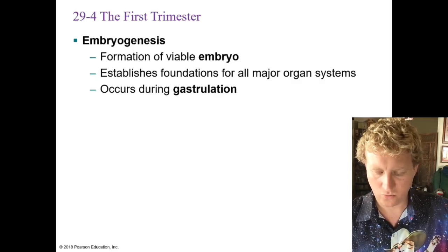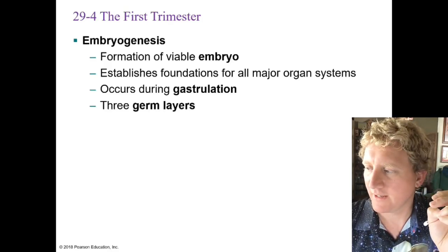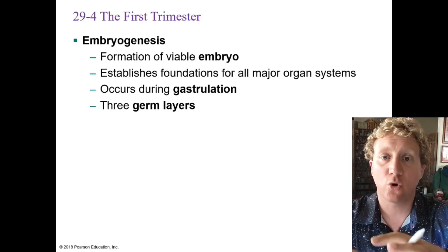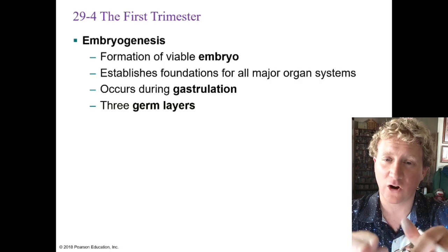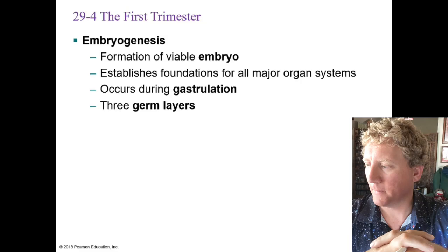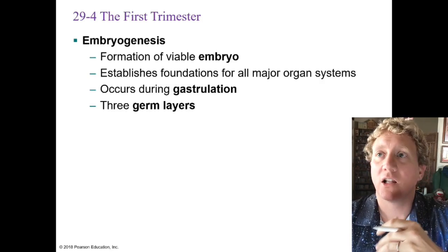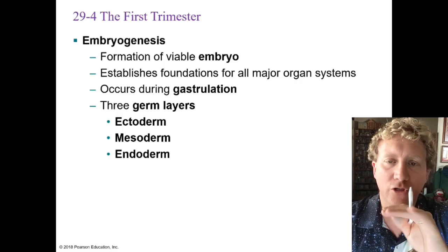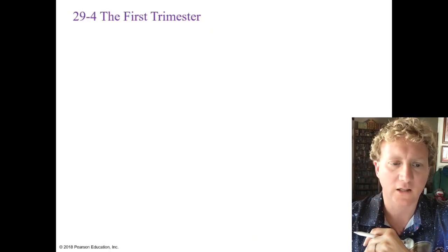Embryogenesis occurs during a process known as gastrulation — germ layer formation. Cells that have been forming as a blob start migrating to different areas based on chemical cues through a process called induction. As they move, they form layers like a cake — three layers. The evolutionary significance of the third layer is huge as it gives rise to connective tissue. The three germ layers from outside in are: ectoderm, mesoderm in the middle, and endoderm on the inside.